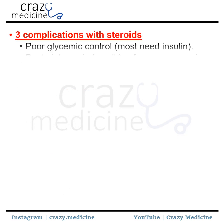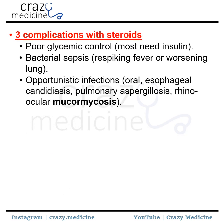The next is three complications with steroids. First and foremost is poor glycemic control — most inpatients on steroids need insulin. Then bacterial sepsis, which can cause re-spiking of fever or worsening of lung condition or pneumonia. Then opportunistic infections, which include oral or esophageal candidiasis, pulmonary aspergillosis, and the most drastic — rhino-ocular mucormycosis.